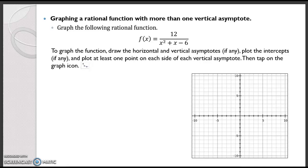Hey everybody! In this video we're going to talk about graphing a rational function with more than one vertical asymptote. So how do we graph this function? We're going to start with the same steps we've talked about in the previous rational functions.